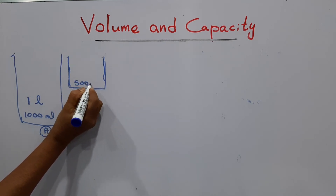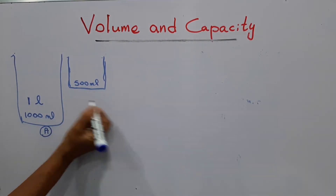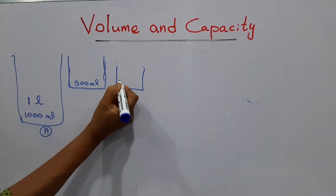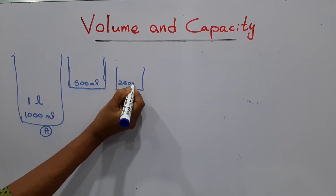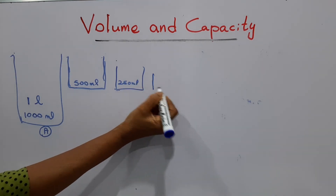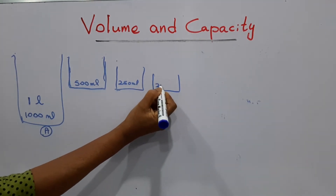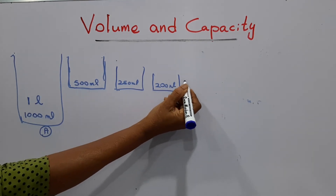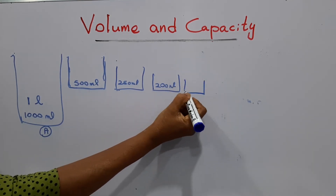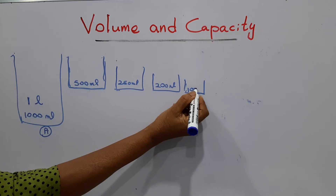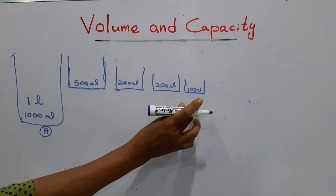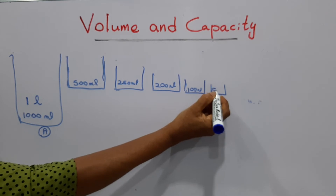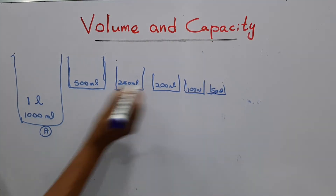We have another vessel that holds two hundred and fifty milliliters, another that holds two hundred milliliters, another that holds one hundred milliliters. That is the capacity of the next one — the smaller one holds fifty milliliters. These are the capacities of each vessel.